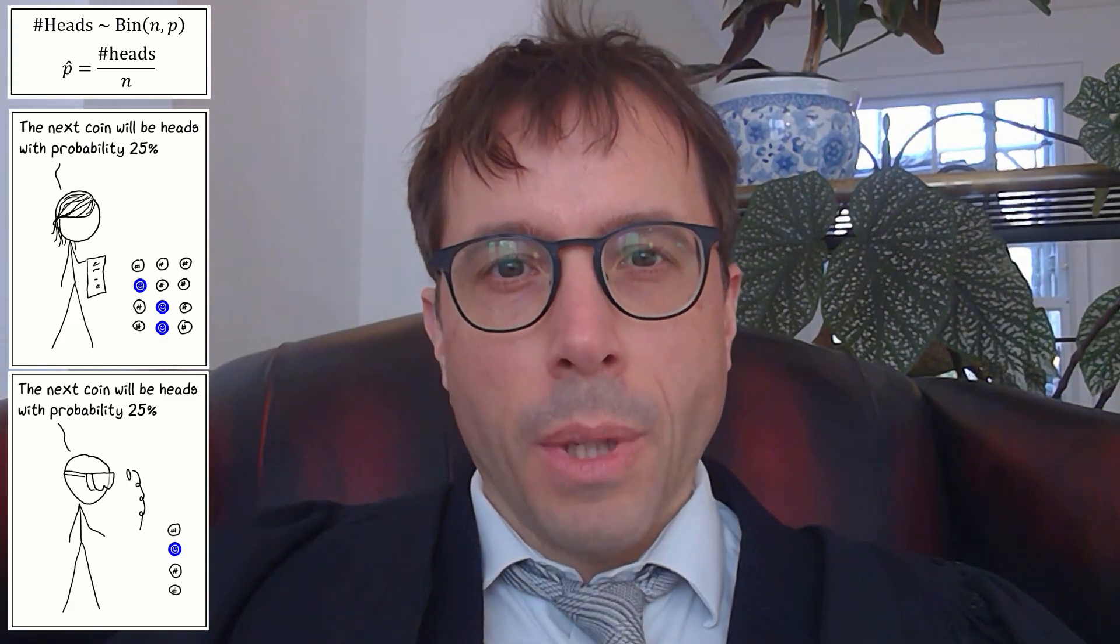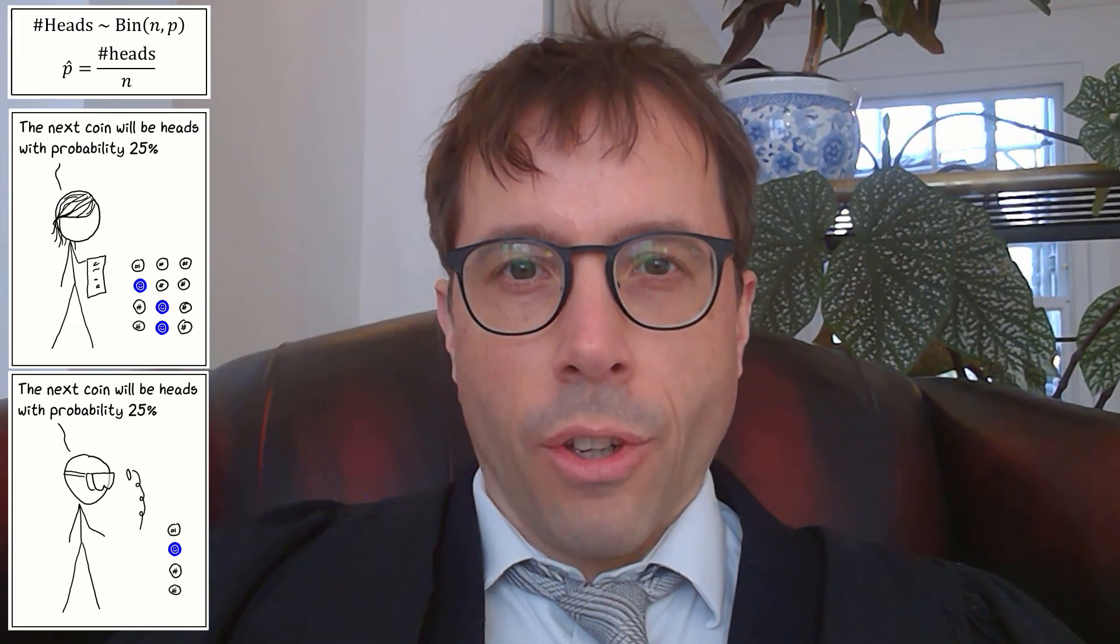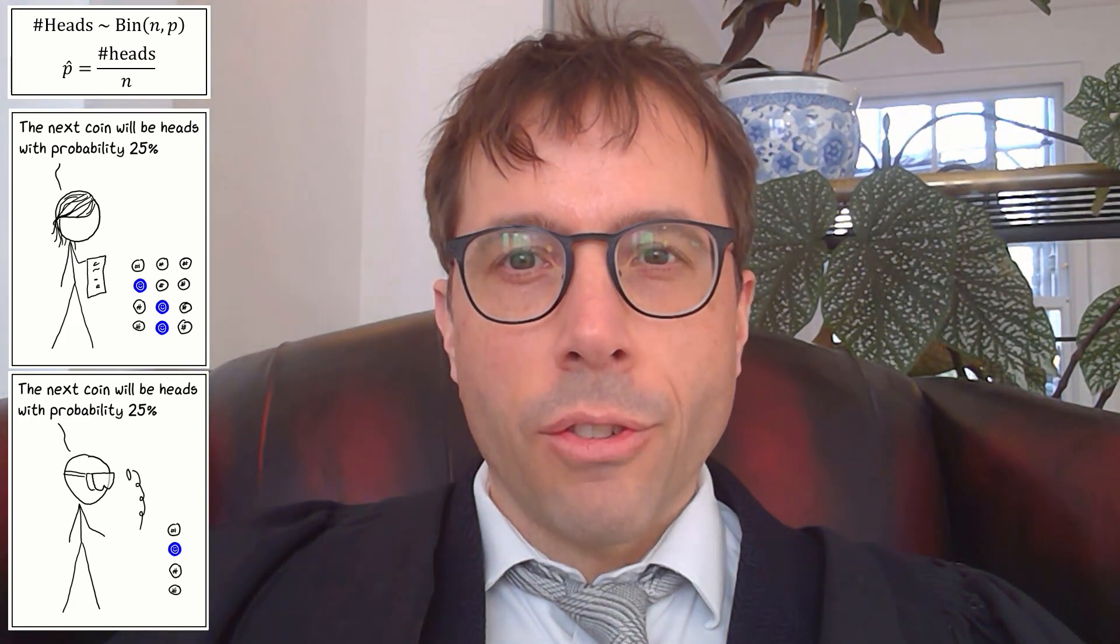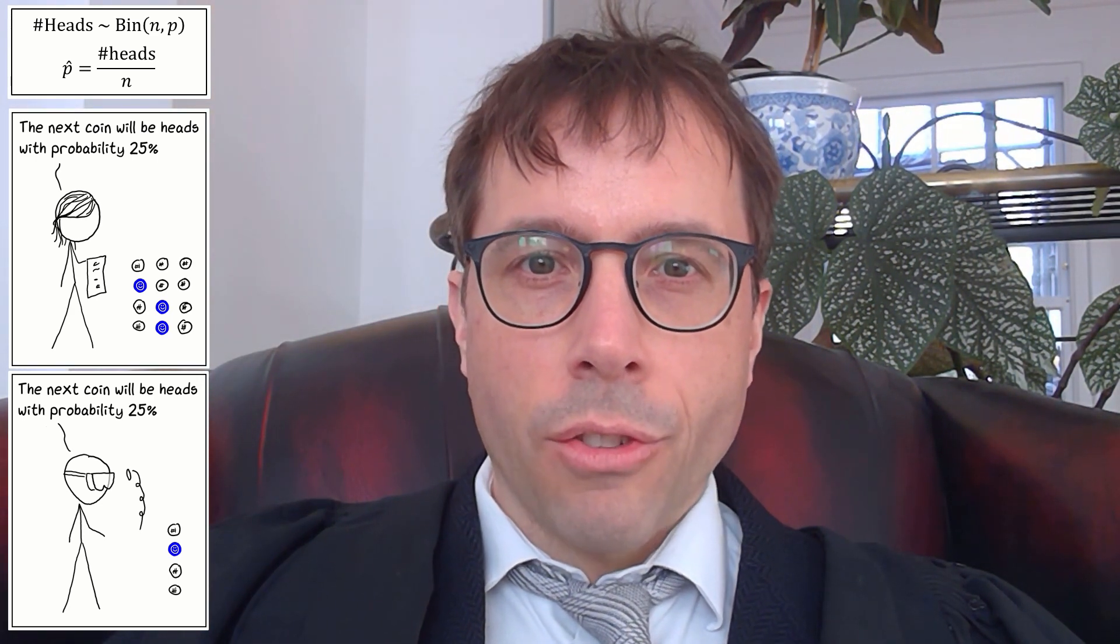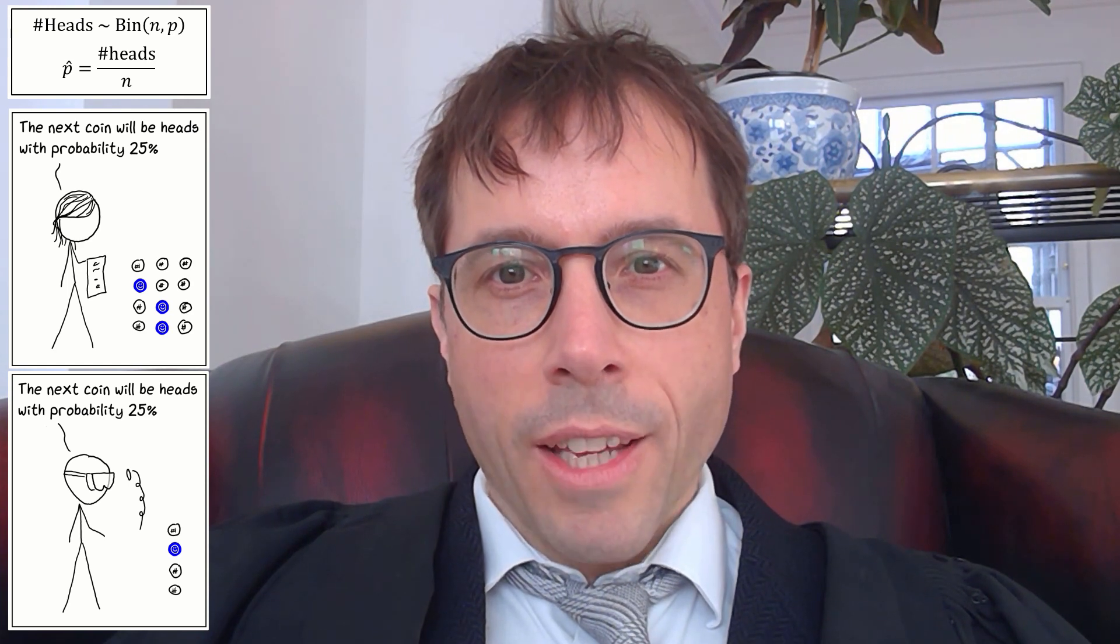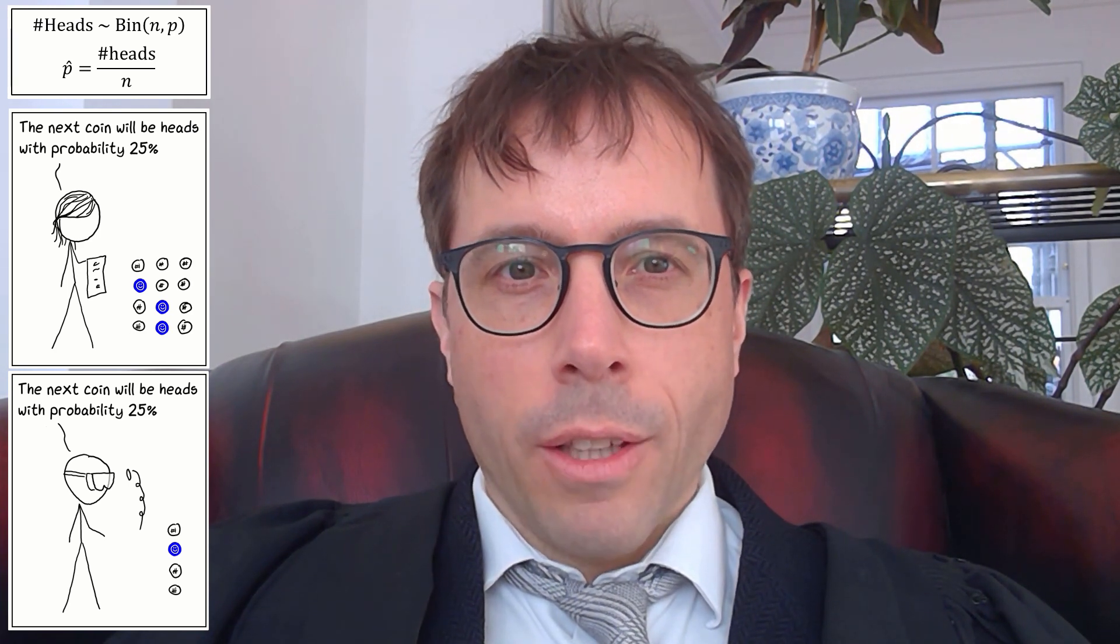Suppose we have a coin, possibly biased. One scientist tosses it 12 times, gets three heads, and estimates that the probability of heads is 25%. Another scientist tosses it four times, gets one head, and comes up with exactly the same estimate.